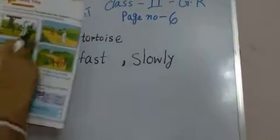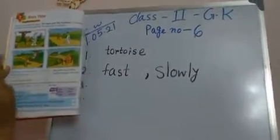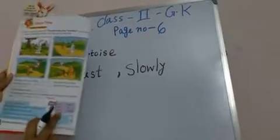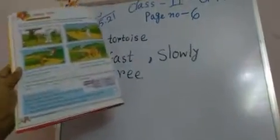Number three. See the picture. Number three. The hare slept under a dash. The hare slept under a tree. Tree is here. Tree is here. So T-R-E-E. Tree is here. So we have already near about completed.